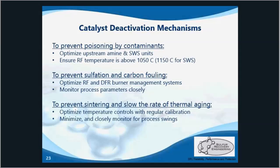To prolong the aging and general attrition of the catalyst, we have to optimize the temperature controls and keep up with the maintenance and calibrations. Following the proper start-up and shut-down procedure is also key, because abrupt temperature changes are what really speed up general attrition and aging. All it takes is one poor start-up or shut-down and you can completely deactivate the catalyst.